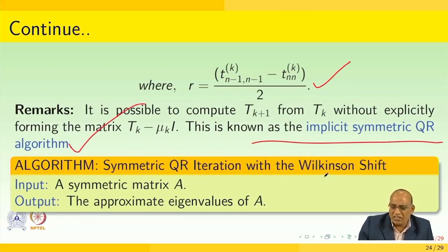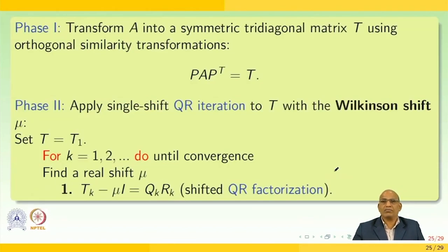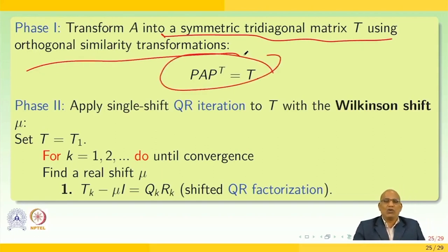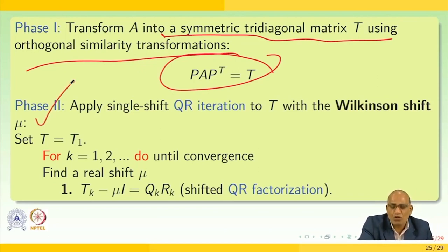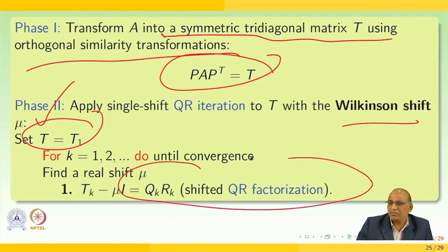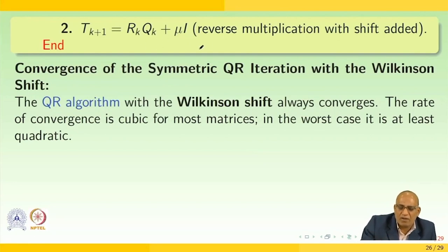Thus if the trailing 2 by 2 submatrix of T_k is given, then the Wilkinson shift is mu equal to T_{nn}^{(k)} plus r minus sign(r) times sqrt(r squared plus T_{n,n-1}^{(k)} squared), where r equals (T_{n-1,n-1}^{(k)} minus T_{nn}^{(k)}) divided by 2. It is possible to compute T_{k+1} from T_k without explicitly forming T_k minus mu_k times I. This is known as the implicit symmetric QR algorithm. The algorithm: in phase 1, transform matrix A into symmetric tri-diagonal T using orthogonal similarity so that P^T A P equals T. In phase 2, apply single-shift QR iteration with Wilkinson shift: set T equal to T_1 and iterate T_k minus mu I equals Q_k R_k, then update T_{k+1} equals R_k Q_k plus mu I until convergence.